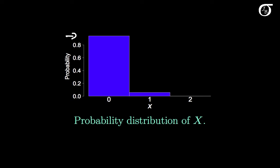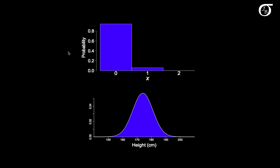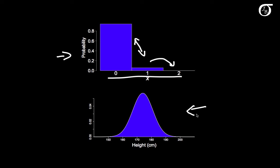Let's contrast what a discrete probability distribution looks like with what a continuous probability distribution looks like. The discrete probability distribution has discrete jumps between values — it goes from 0, jumping down to 1, then jumping to 2, with three distinct possibilities. Down below is approximately the distribution of heights of Canadian males, which is a continuous random variable modeled with a smooth curve. We don't have these distinct discrete jumps, so when we eventually talk about continuous probability distributions, we'll have to handle them in a slightly different way.